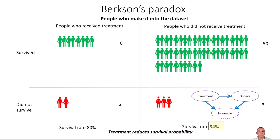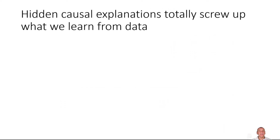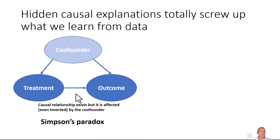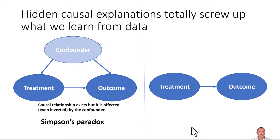For both paradoxes, there's a hidden causal factor impacting the observed data. For Simpson's paradox, we have a common confounding variable, meaning the causal relationship exists but is affected or even inverted by the confounder from the observational data. For Berkson's paradox, we've got a common collider, which again means that although a causal relationship exists between treatment and outcome, it's affected or even inverted by the collider.